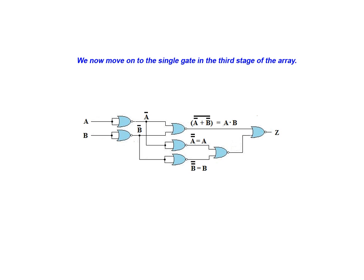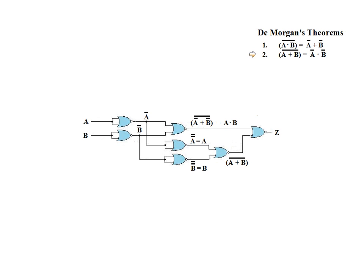We now move on to the single gate appearing in the third stage of our array. The standard NOR function is applied to inputs A and B. We will once again be using DeMorgan's second theorem to restate this output expression in an AND format. The application of this theorem provides us with the resulting expression NOT A and NOT B.